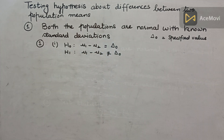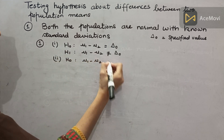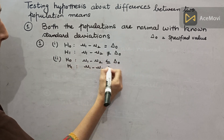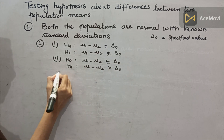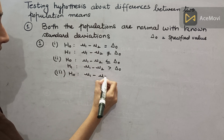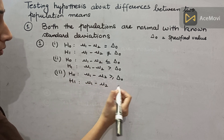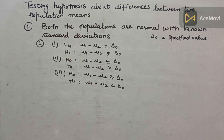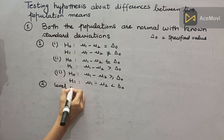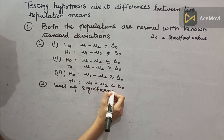Then we form the alternative hypothesis. There are some steps you have to remember before solving a problem, so that you can solve your question easily. The second step is the level of significance, which is denoted by alpha.